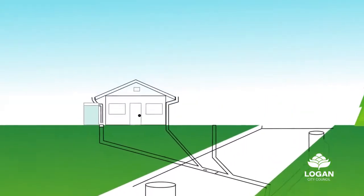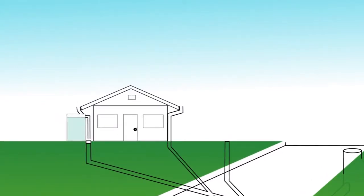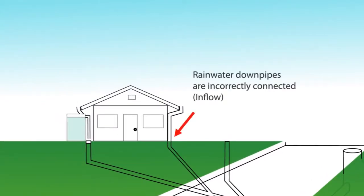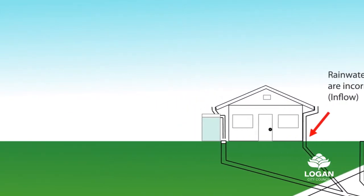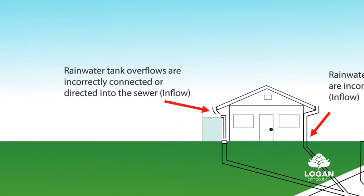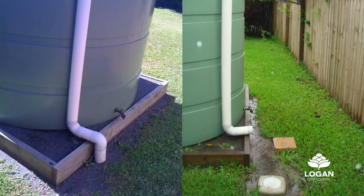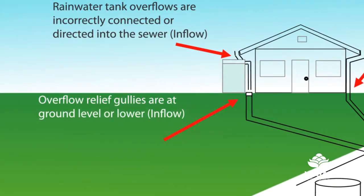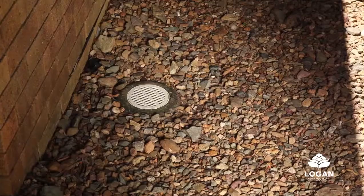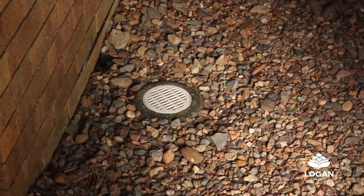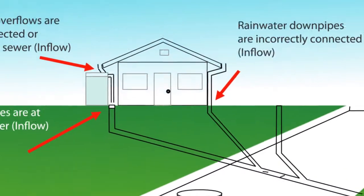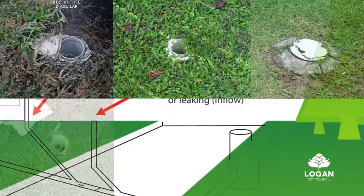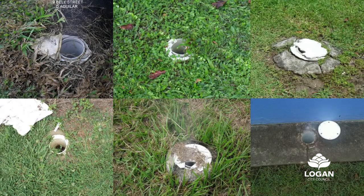This unintended stormwater inflow occurs when rainwater downpipes are incorrectly connected, rainwater tank overflows are incorrectly connected or directed straight into the wastewater drain, overflow relief gullies are at ground level or lower, or the inspection opening on a wastewater house drain is cracked or leaking.